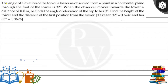The question says that the angle of elevation of the top of a tower, as observed from a point in a horizontal plane through the foot of the tower, is 32°. When the observer moves towards the tower a distance of 100 meters, he finds the angle of elevation to be 63°. Find the height of the tower and the distance of the first position from the tower. Take tan 32° = 0.6248 and tan 63° = 1.9626.